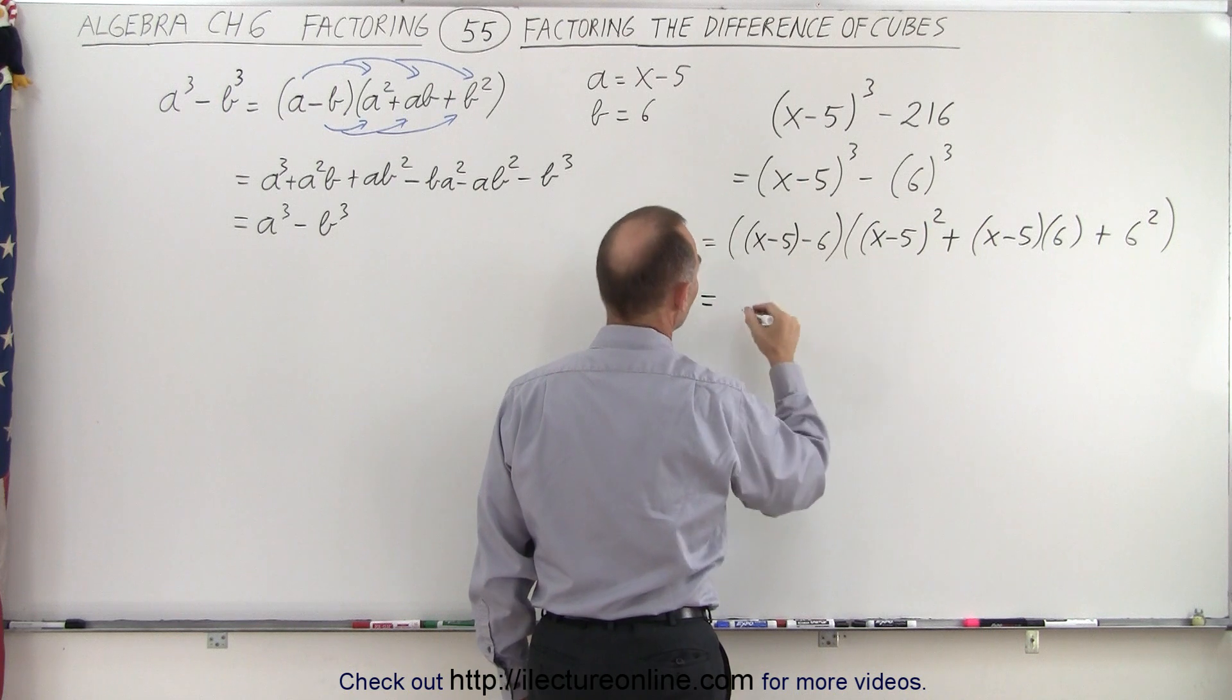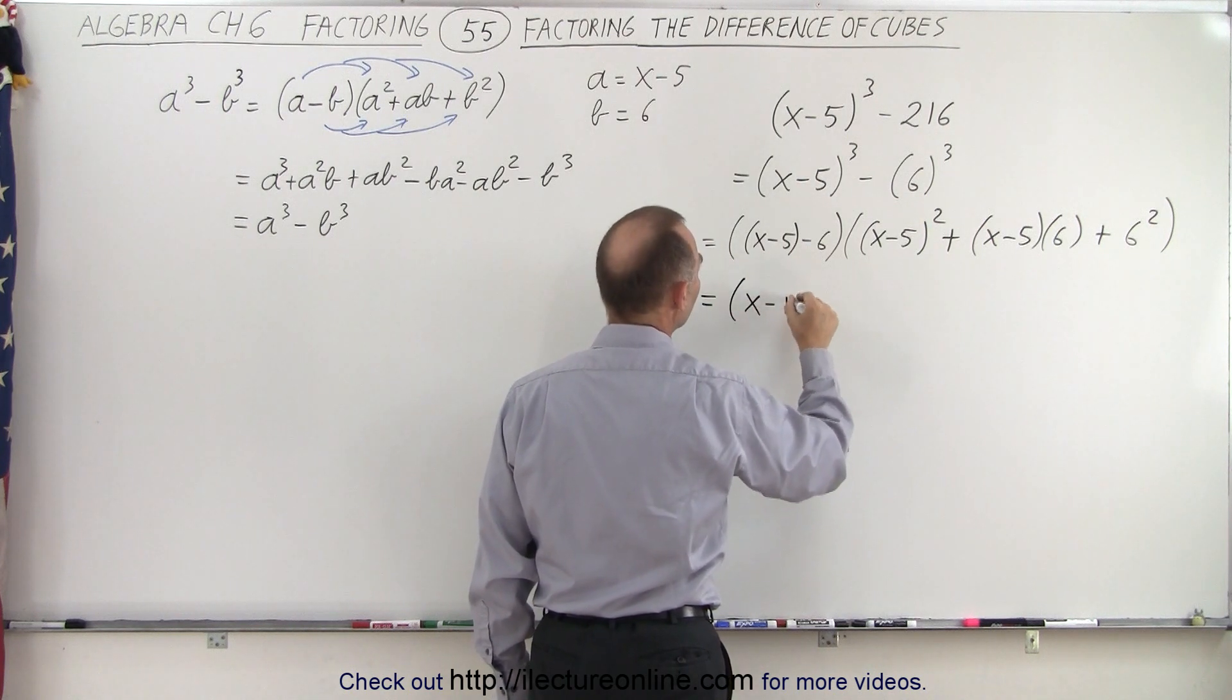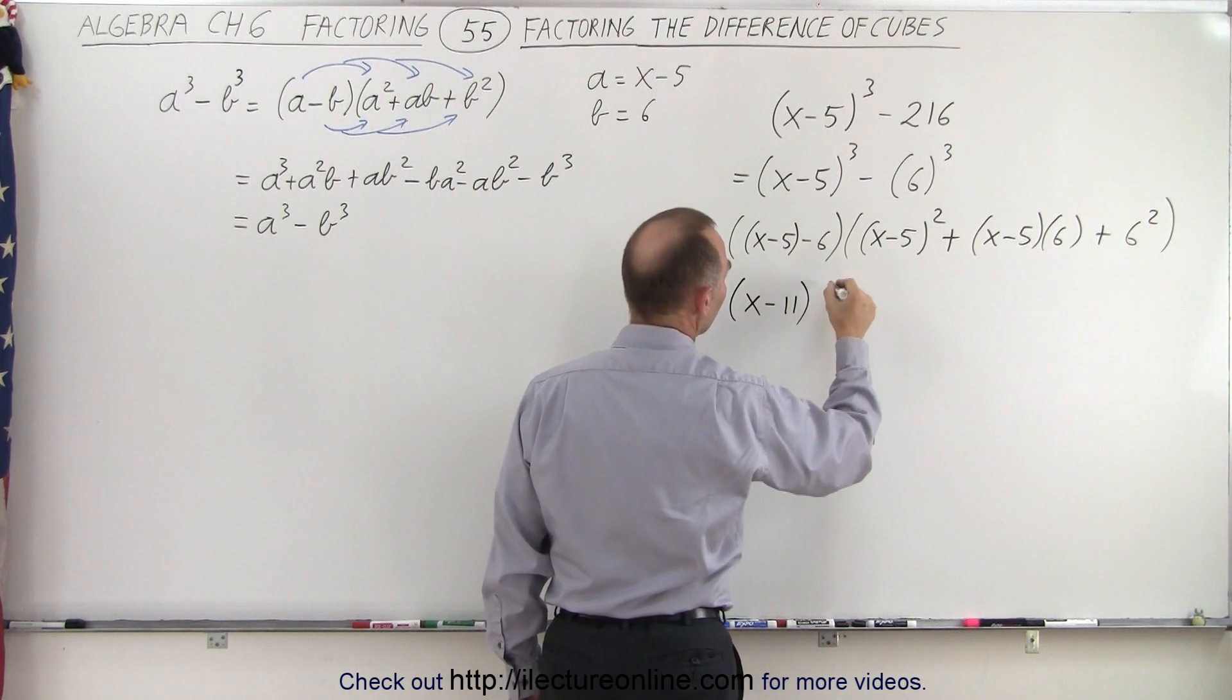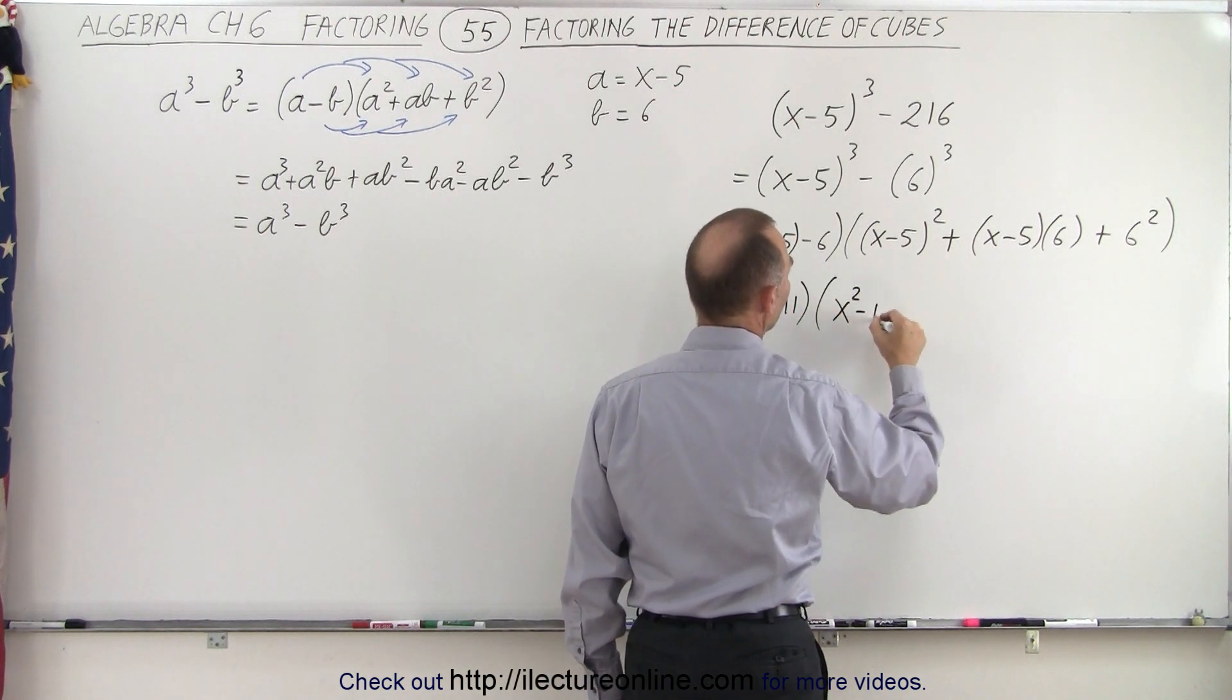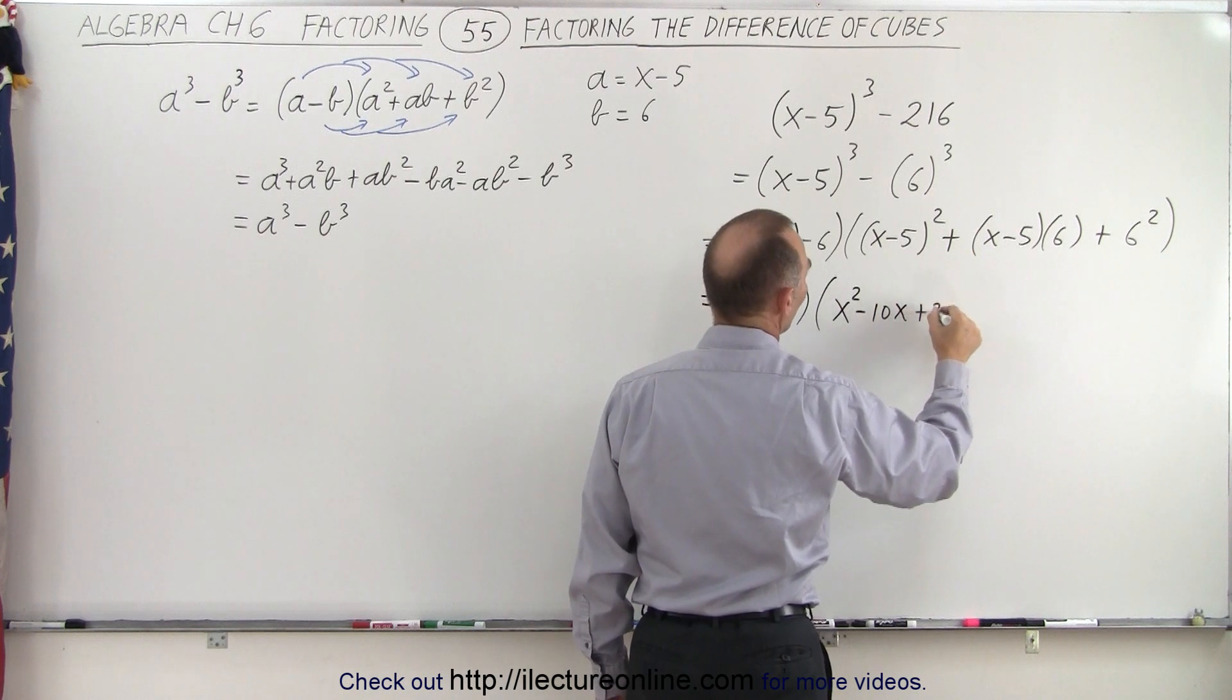x minus 5 minus 6 can be written as x minus 11 times, so here we can multiply that out. That gives us x squared minus 10x plus 25.